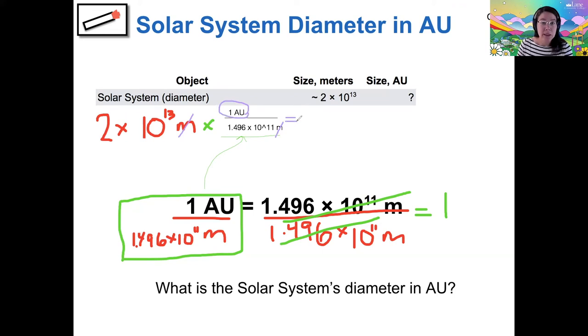So now it is the time to practice my scientific notation calculating skills. I still have 2 times 10 to the 13 meters in my numerator. And I am dividing that number by 1.496 times 10 to the 11 meters since that's in the denominator of this conversion factor. So let me go ahead and write that out as well.